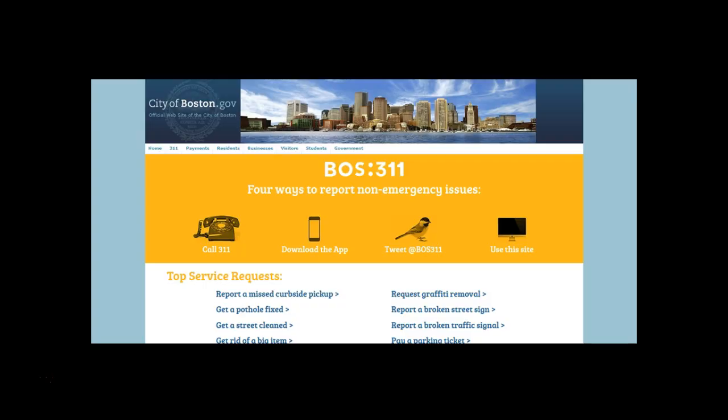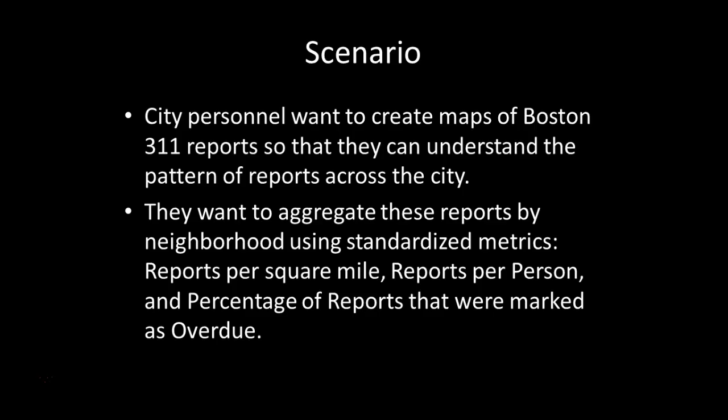In the example we're going to see here, we're going to use Boston 311 data in our geoprocessing model. The City of Boston has a program that allows constituents or employees to report problems across the city, from graffiti and potholes to crime. We want to map that data across the city, aggregate it by neighborhood, and measure it in a standardized way: reports per square mile, reports per person, and the percentage of reports that haven't been addressed in a timely manner.